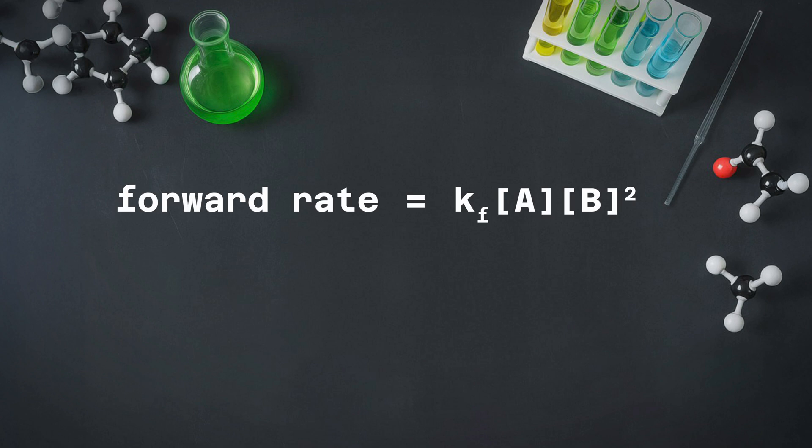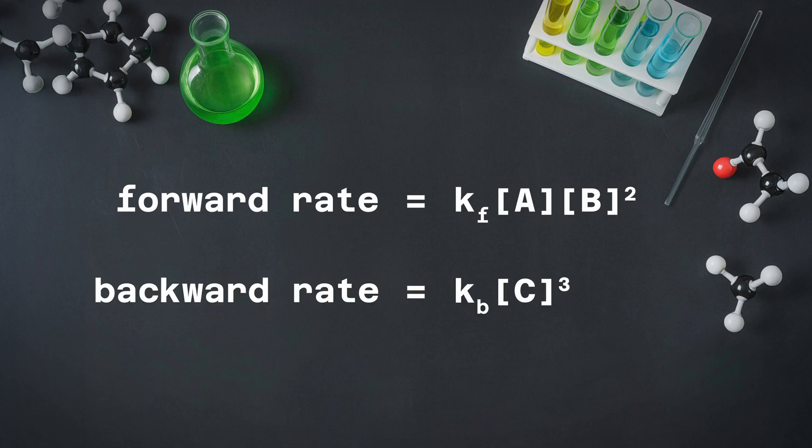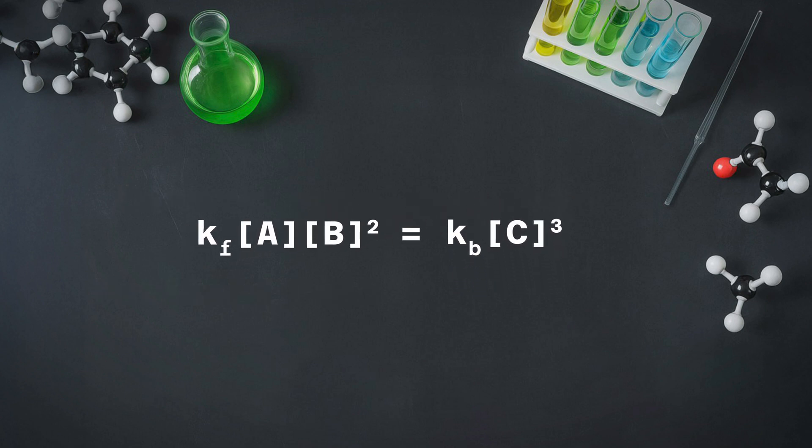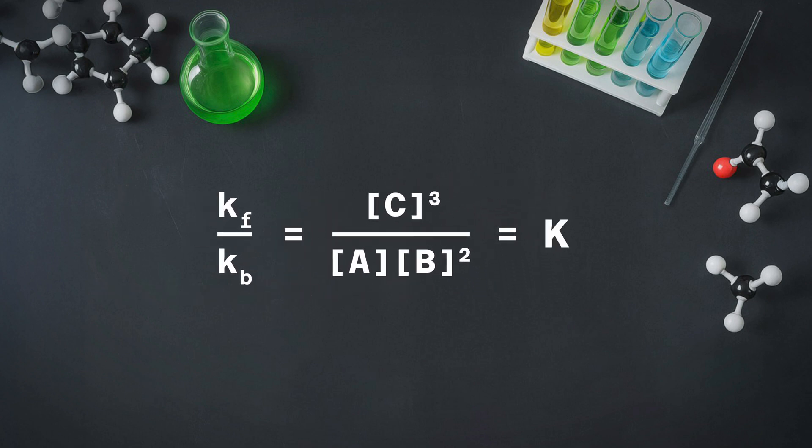The forward reaction and the back reaction both have their own rate constants. So the equilibrium constant is simply the forward rate constant divided by the back rate constant. But if it's that simple, why are we messing around with this complicated version with all these different numbers and powers? Well, very simply, it's usually easier to find concentrations than rate constants. And secondly — and I don't like this but it's a fact of life — it also makes a lovely exam question.